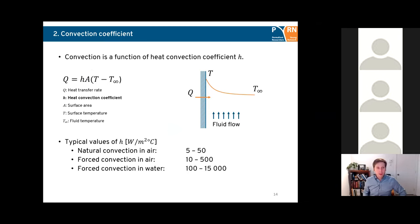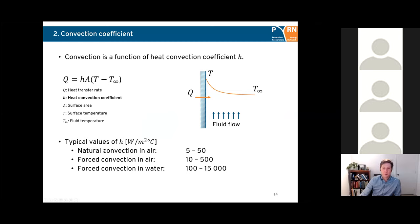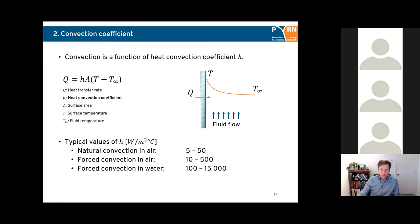Convection is calculated as a function of the heat convection coefficient. Basically, the heat transfer rate between a surface and fluid is controlled by the temperature of the surface, the temperature of the fluid, the surface area, and the heat convection coefficient, which takes into account heat transfer at the interface. Typical values: natural convection in air is 5 to 50; forced convection in air is higher due to wind; forced convection in water is orders of magnitude higher than that.